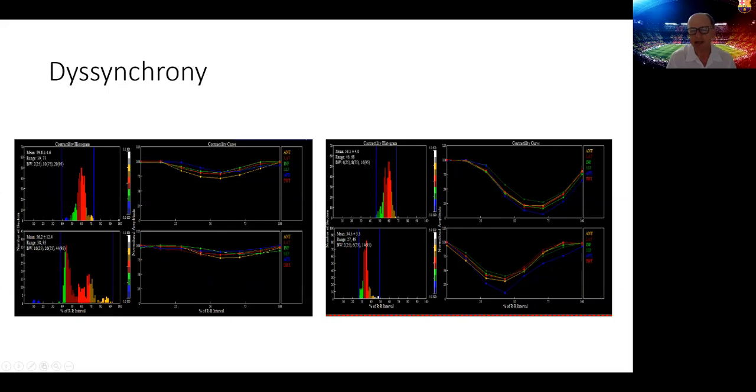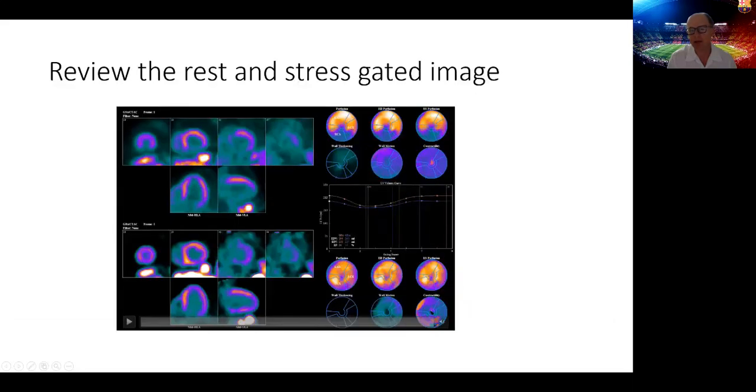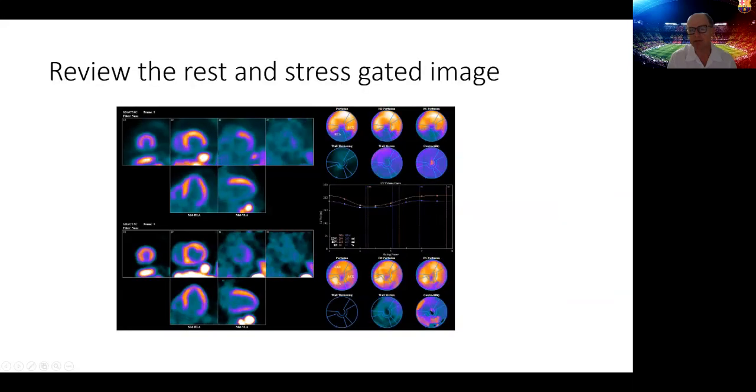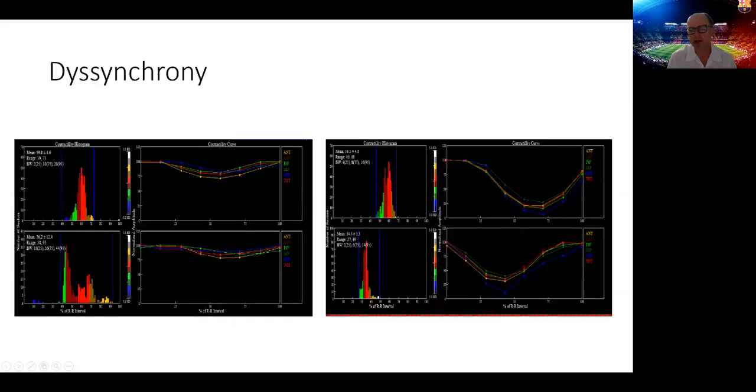We move to the dyssynchrony analysis, and just in this case for the purpose of illustration, you can see on the right-hand side, I put a normal patient. This is not this patient, this is a normal patient showing the contractility curve of the left ventricle of each segment at rest and stress. In our patient here, you can see there is poor contractility of all the segments at rest and post-stress, all coming together at the same time, but still poorly contractile. This is important to note, especially if you get a situation where you have changes from rest or stress in the contractility indicating ischemic stunning.